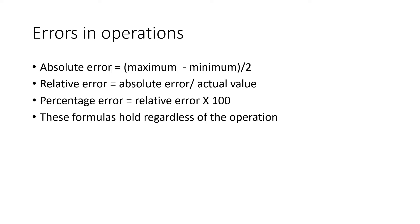Let's look at errors in operations. These formulas apply whether you are adding, subtracting, multiplying, or dividing. The absolute error in all operations is given by the maximum value minus the minimum value, divided by 2. The relative error and percentage error are calculated the same way as before. Remember these formulas hold regardless of which operation you are looking at.